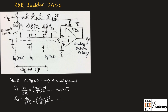In the same way, we can write I2 which is equal to VR divided by 2² × R, that can be written as VR divided by R multiplied with 2 to the power of minus 2, at node 2. Similarly, I3 is equal to VR divided by 2³ × R, which can be written as VR divided by R multiplied with 2 to the power of minus 3, at node 3.